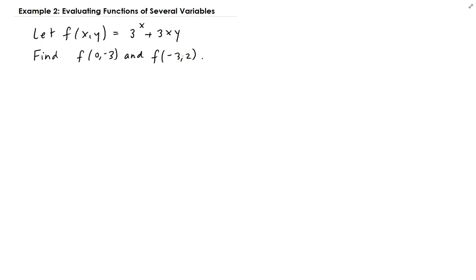So for the first one, remember we have x is 0 in this case, and y will be negative 3. So we have f of 0, negative 3. Again, this is x, this is y.